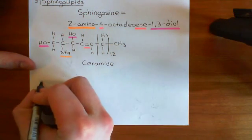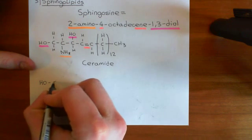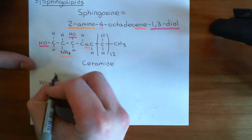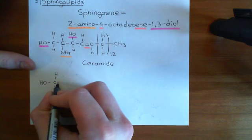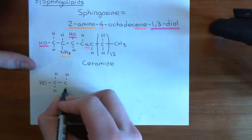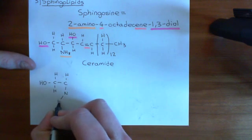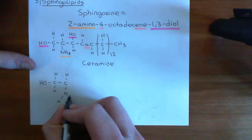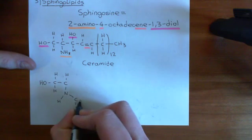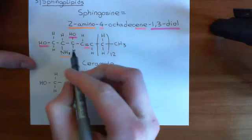So let's draw that out. Let's firstly redraw the structure of sphingosine. Here's the first carbon with an alcohol group coming off. Then, off this second carbon, we have the amino group. This amino group is now going to be involved in an amide link to some long-chain carboxylic acid.